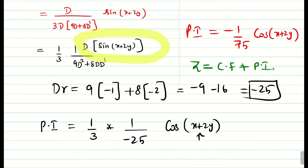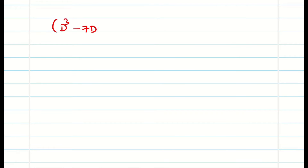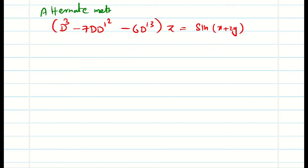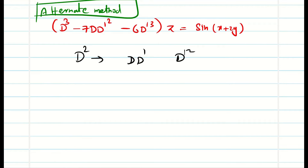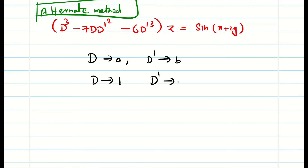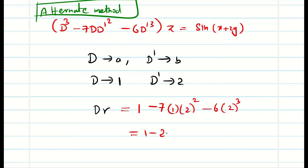Now let's look at the alternative method for d³ + 7dd'² - 6d'³ applied to z = sin(x + 2y). In this method, similar to Type 1, we simply replace d by a and d' by b — that is d → 1, d' → 2. The denominator becomes: 1 - 7·(1)·(2²) - 6·(2³) = 1 - 28 - 48 = -75. Note this down when writing exams: mention 'Alternative Method'.